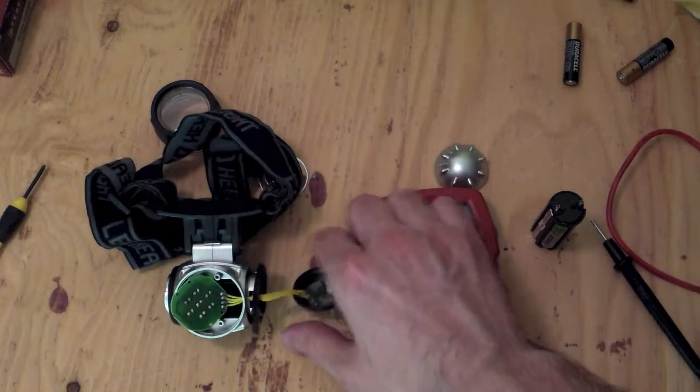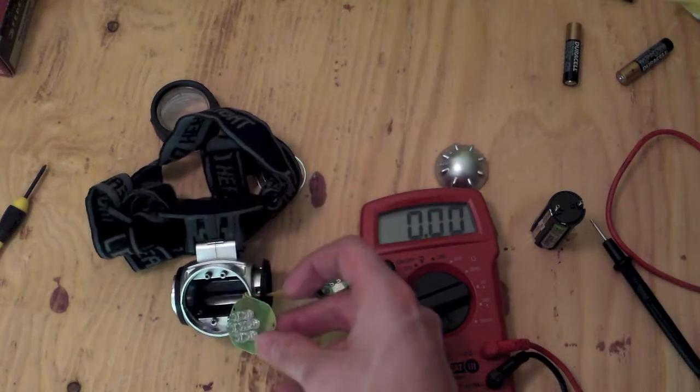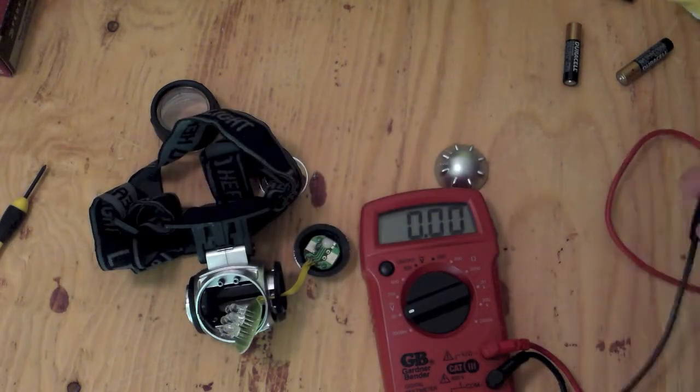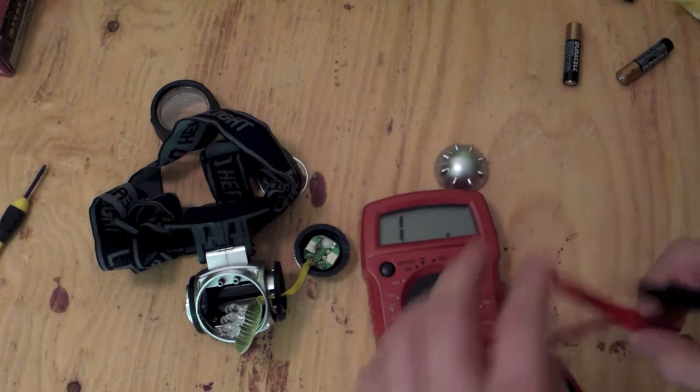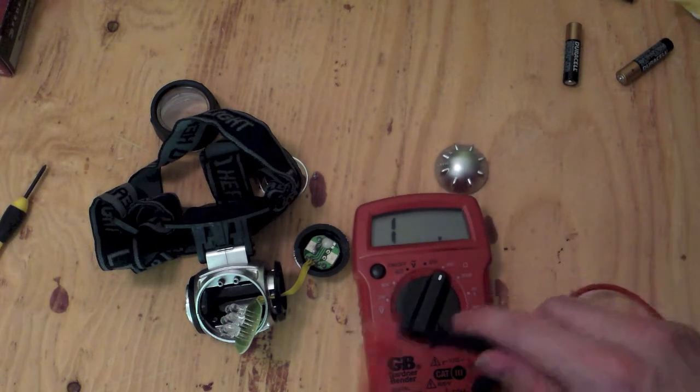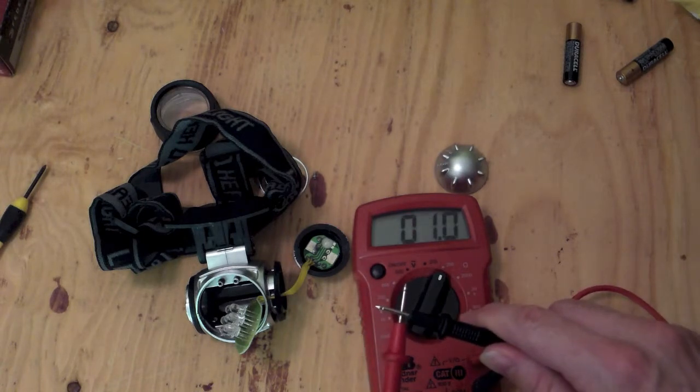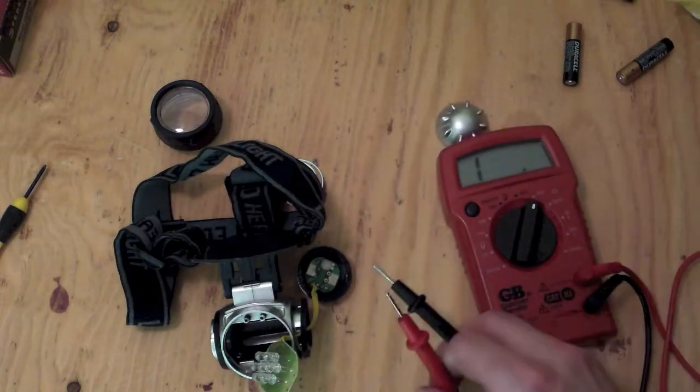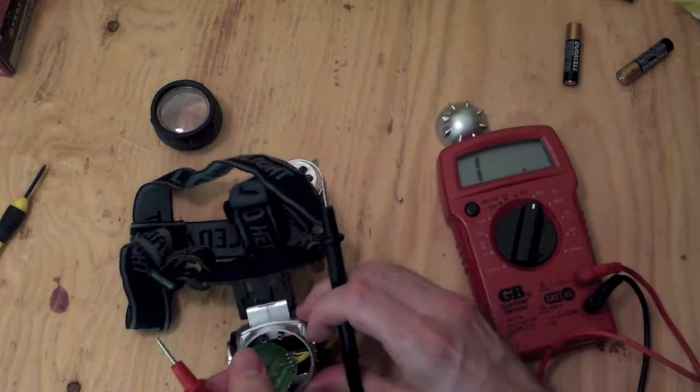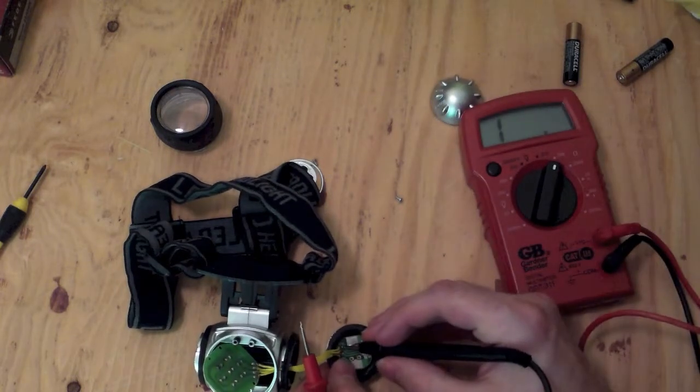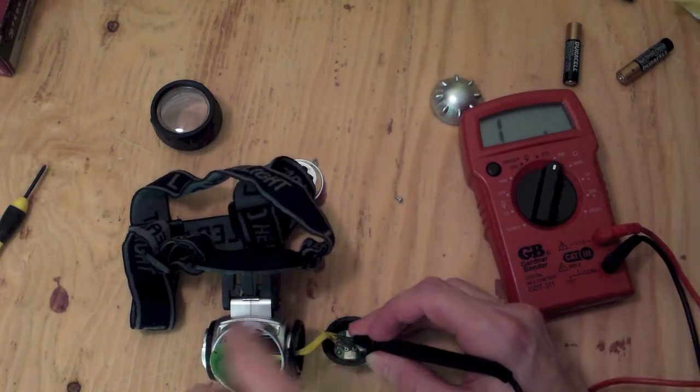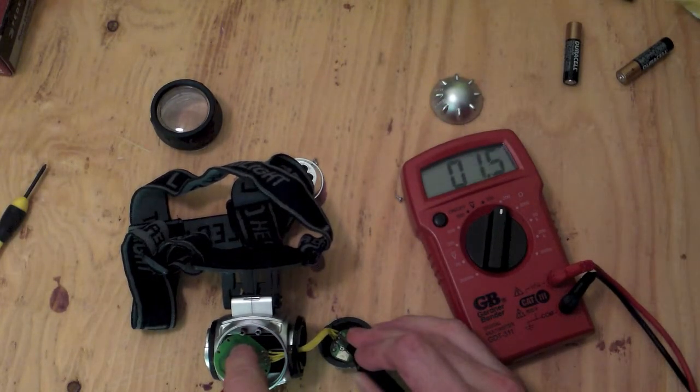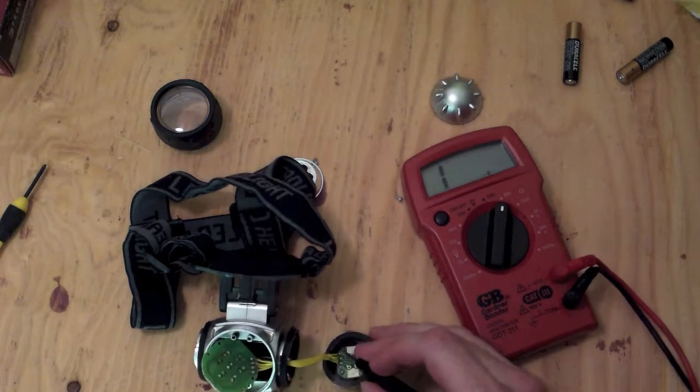So let's verify continuity then between this little circuit board here and this little circuit board. To do that, I'm going to switch it to ohms. So when there's no continuity, it's going to show that. When there is continuity, it's going to show that. Lead number one works.